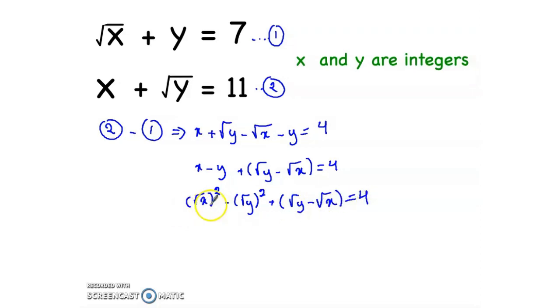And now we have the form a² minus b², which is equal to a minus b times a plus b. So radical x minus radical y times radical x plus radical y.